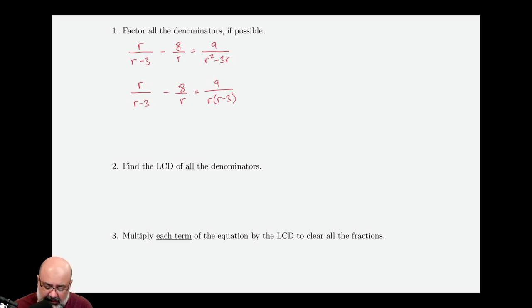Now we need to find the LCD of all the denominators. So we write r minus three, r, and r times r minus three. So now we notice, or we ask ourselves, what cancels out an r minus three? Well, an r minus three. So we place an r minus three in the numerator for all of these fractions. Next, we move on to the next fraction. What cancels out an r? Well, an r.